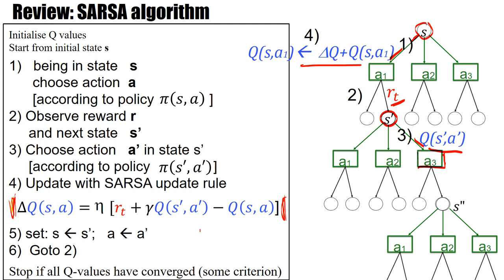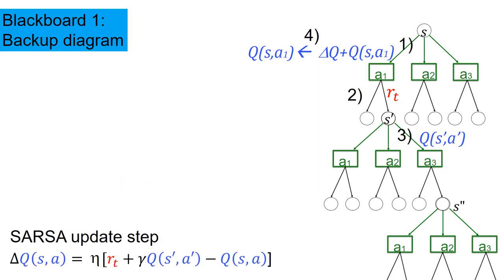Let's discuss this from a slightly different perspective of backup diagrams. So I said we start in a state S. So let's draw this state S. And then we take a first action. Let's draw this action just as a dot. Then we go to the next state S prime. Let's draw this as a circle. Then we decide to take a next action. Let's draw this as a dot.